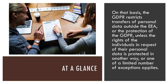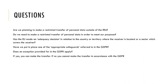If you wish to make a restricted transfer, you should work through the following questions until you reach a provision that permits it: Are we planning to make a restricted transfer of personal data outside the EU? Do we need to make a restricted transfer to meet our purposes? Has the EU made an adequacy decision in relation to the country or territory where the receiver is located, or a sector which covers the receiver? We will cover adequacy decisions in a separate lesson.